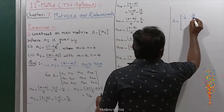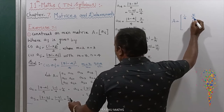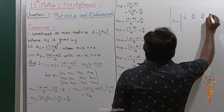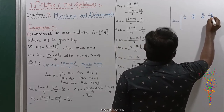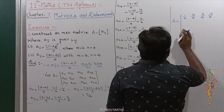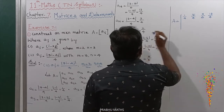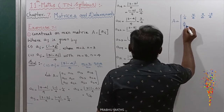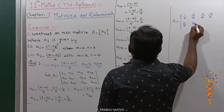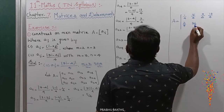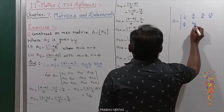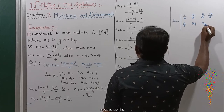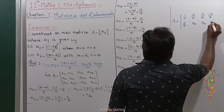To summarize the first row values: 1 by 4, 5 by 4, 9 by 4, 13 by 4. The second row values are: 2 by 4, next is also 2 by 4, next is 6 by 4, and the last one is 10 by 4.